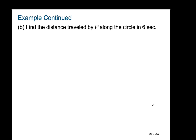Part B says: find the distance traveled by P along the circle. We need to figure out what variable that is — distance traveled along the circle is an arc length, and we use lowercase s for arc length.